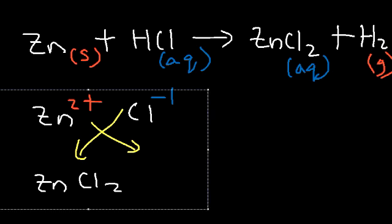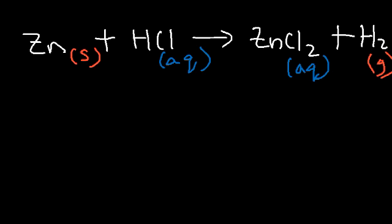Hydrogen is a gas, so we label it (g). To balance the equation, we place a 2 in front of HCl because there are two hydrogens on the right side. That gives us two chlorine atoms on both sides and one zinc atom on each side — so the equation is balanced.